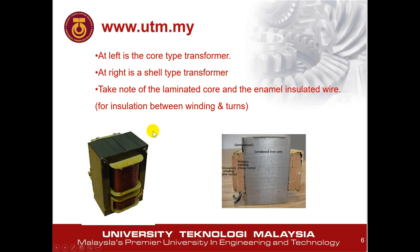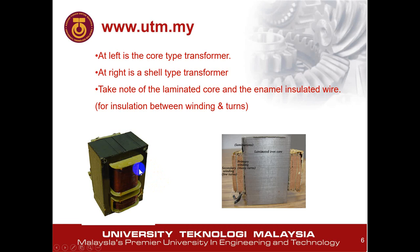You have to know the difference between core type and shell type transformers. Also take note that if an iron core is used, it must be a laminated iron core. You cannot use one solid iron core — it needs to be laminated to avoid current loss, which we will discuss in the third part of this topic. The transformer also uses enamel-insulated wire. The wires appear to be wound together with no insulator, but there actually is insulation — it is just very thin, almost like a coating. That type is called an enamel-insulated wire.